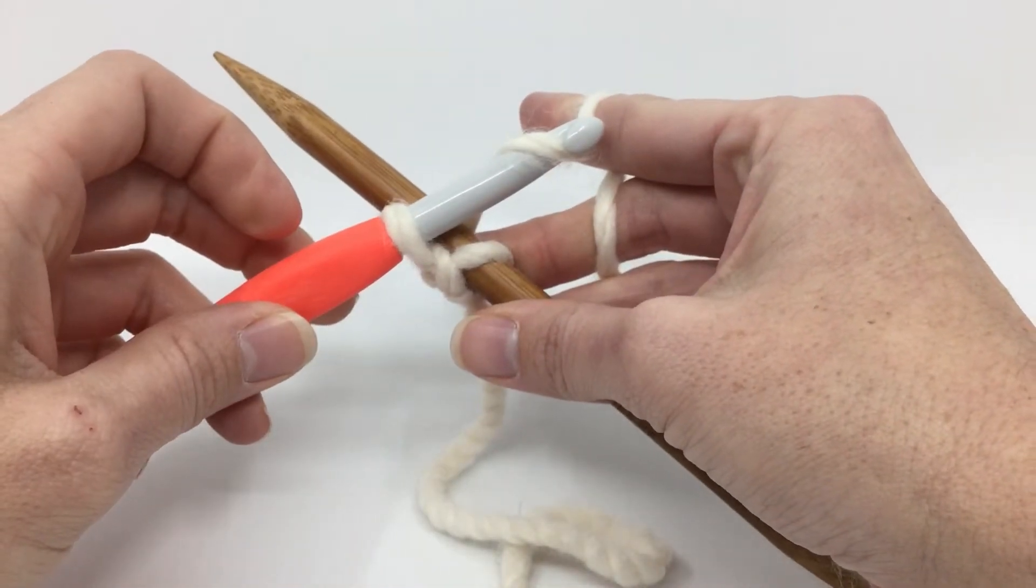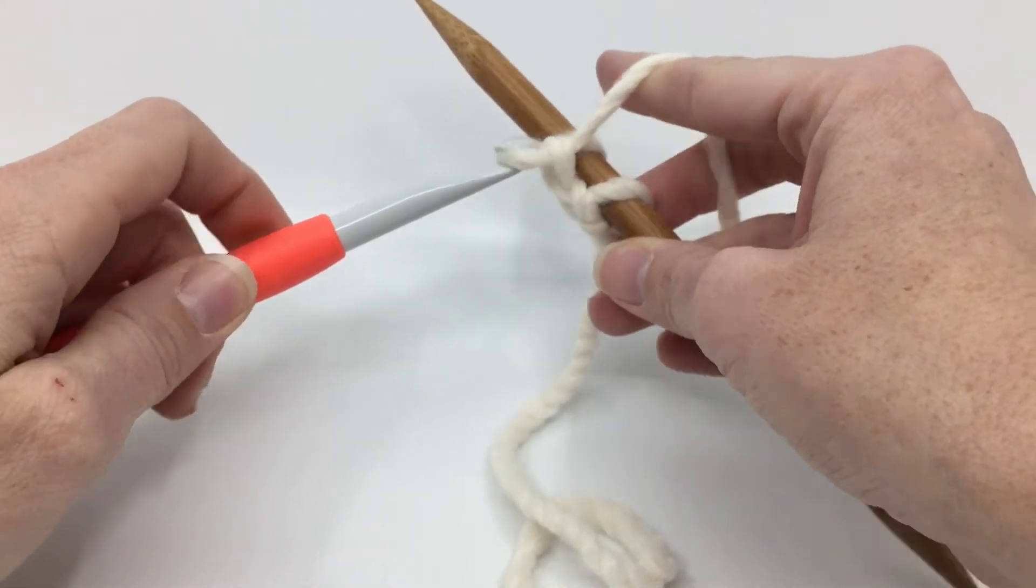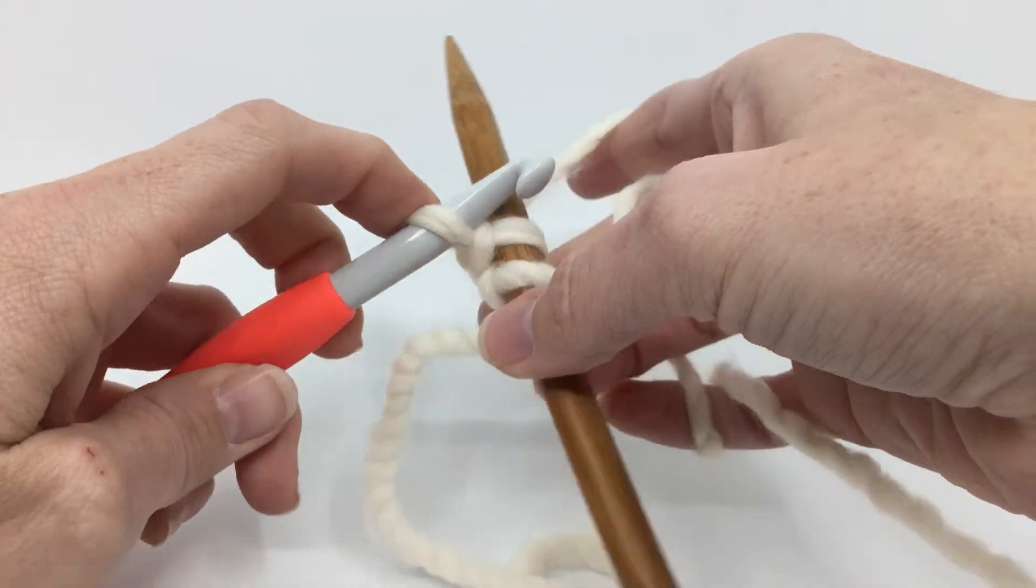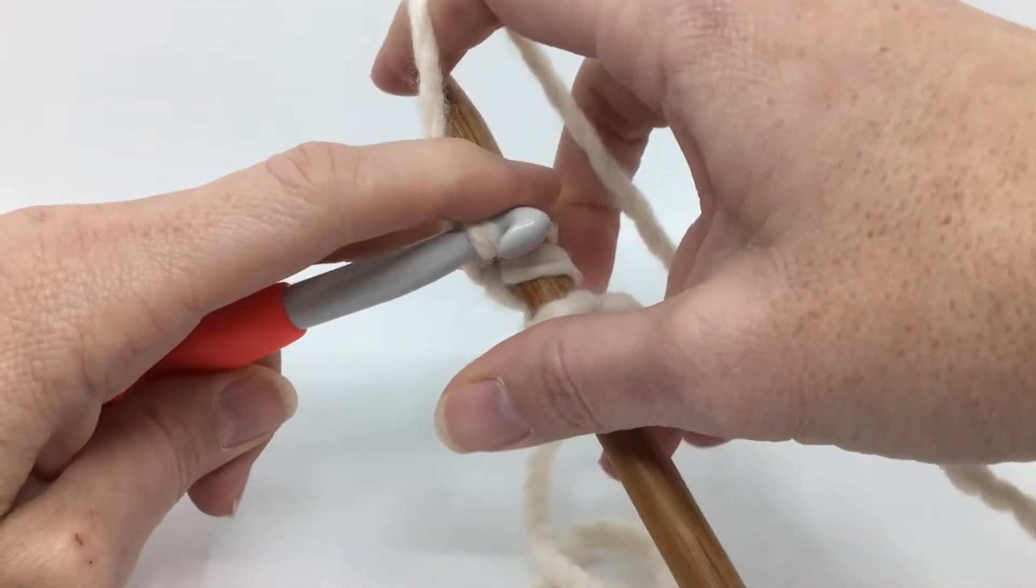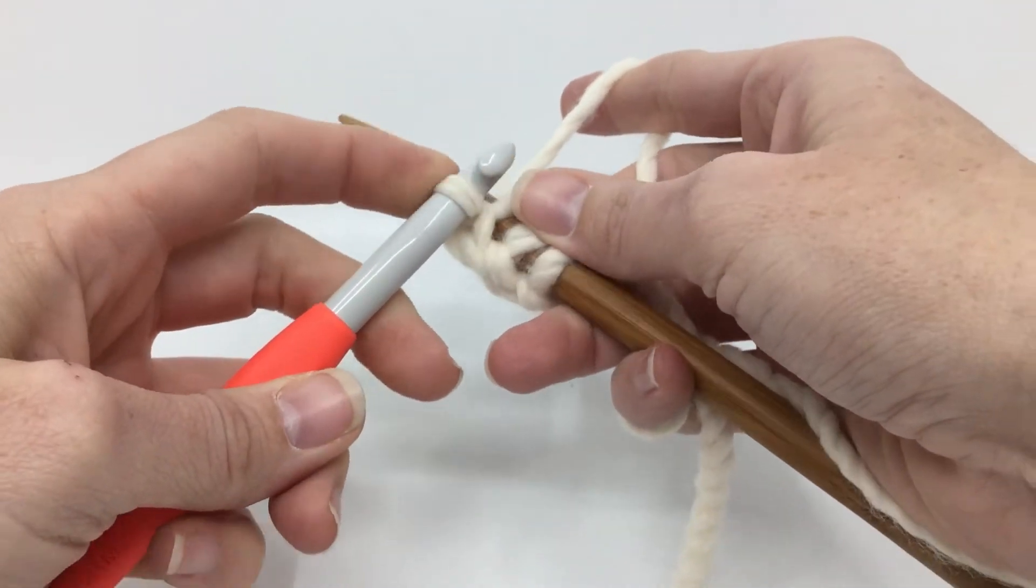Again, we're going to yarn over just like we do in crochet, pull it through. Two have been made. You're going to get in the habit of when you do these, yarn over pull through, you're going to kind of get to where you figure out how to wrap that around the needle nice and easy.